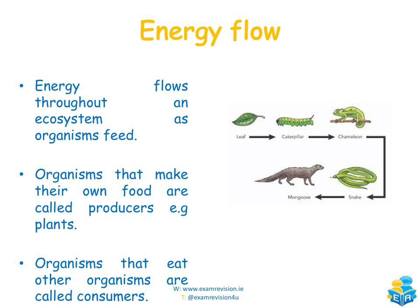Now we're going to look at energy flow throughout the ecosystem. Energy flows throughout the ecosystem as all organisms feed. Organisms that make their own food are called producers — plants make their own food through photosynthesis, so they are known as producers. Organisms that eat other organisms are called consumers. As the primary consumer eats the producer, it gains some energy.